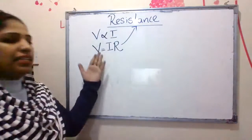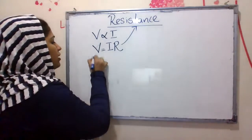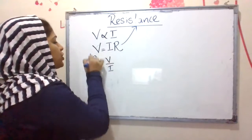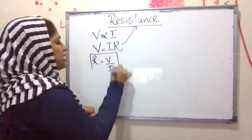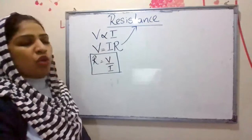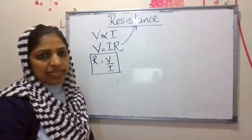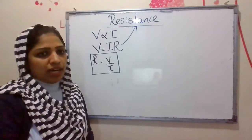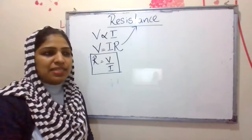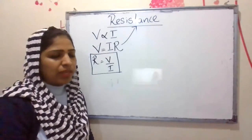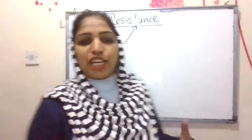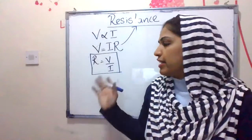Resistance R is equal to V divided by I — the ratio of potential upon current. V is equal to I into R. That is the constant of proportionality. Resistance is R, the ratio of potential difference and current.